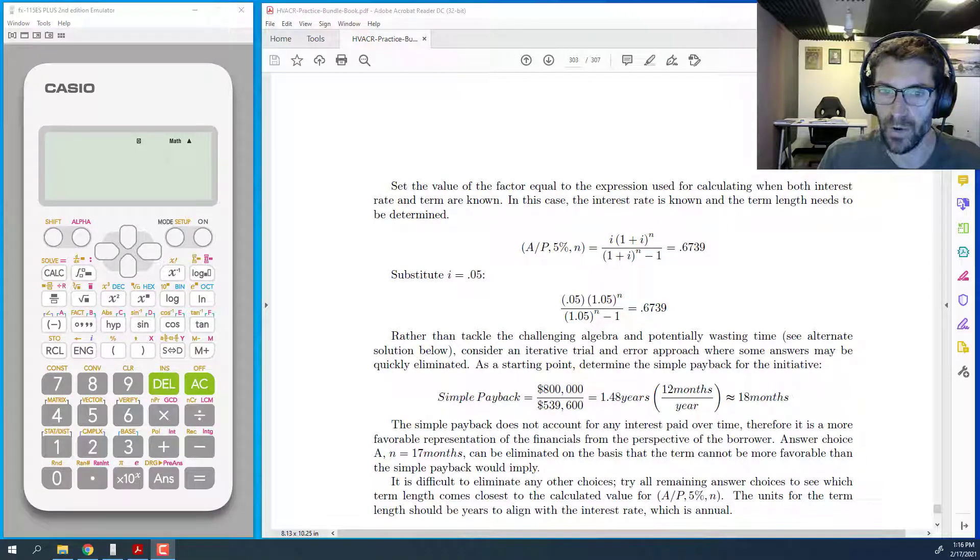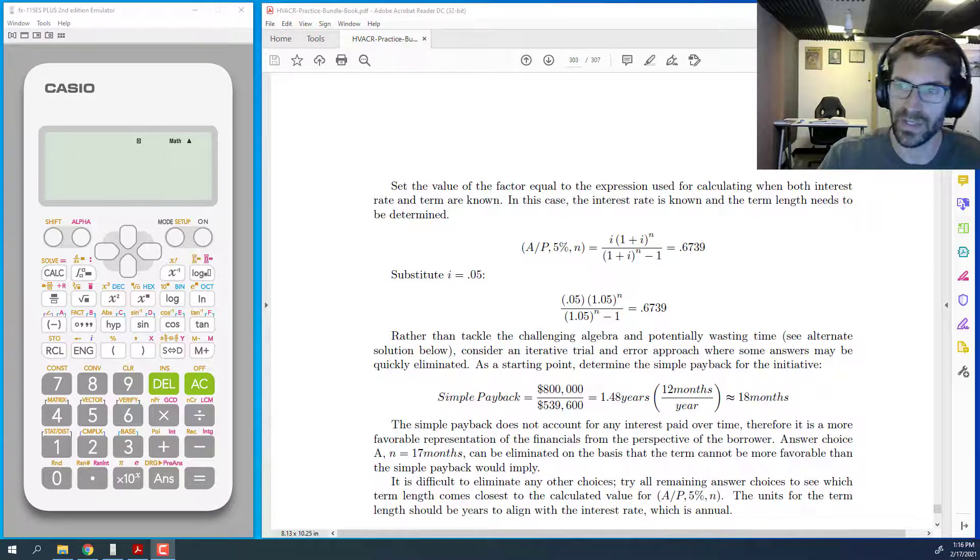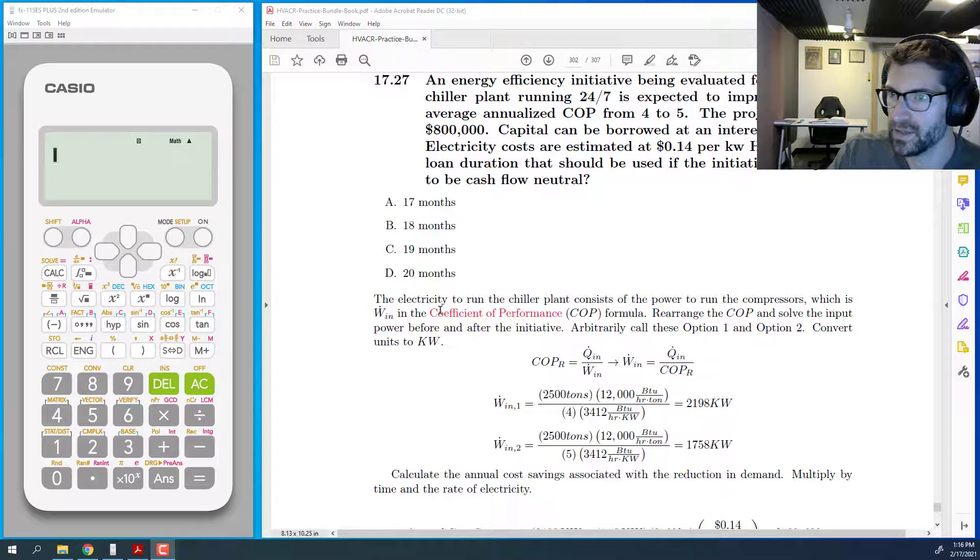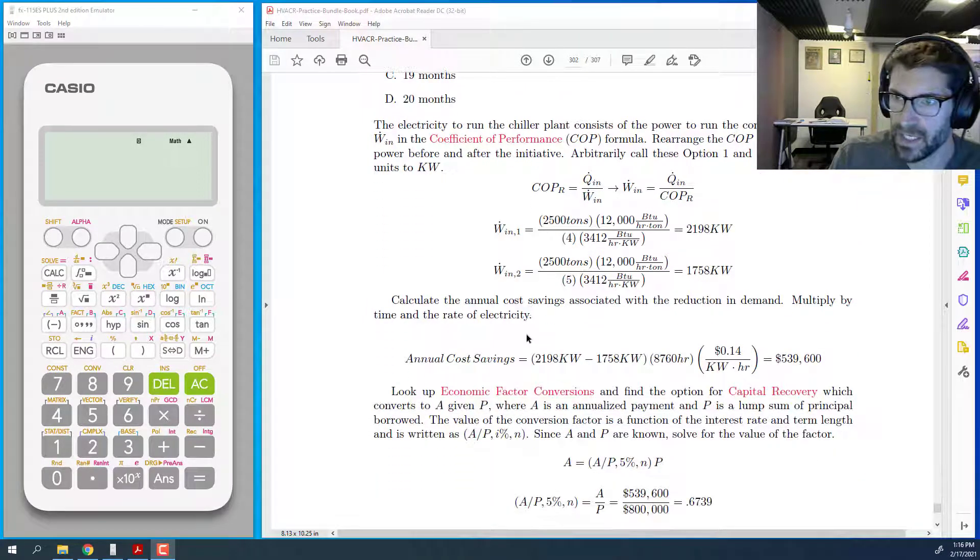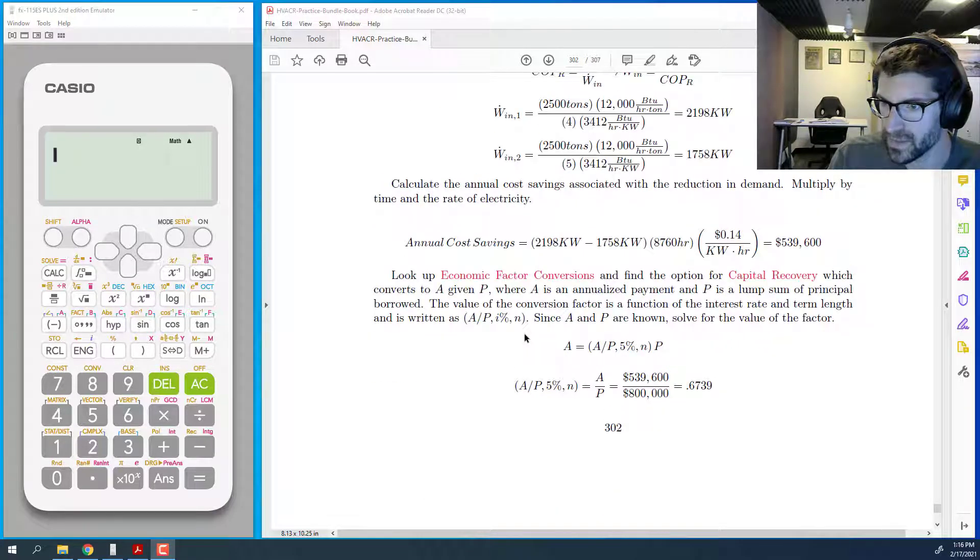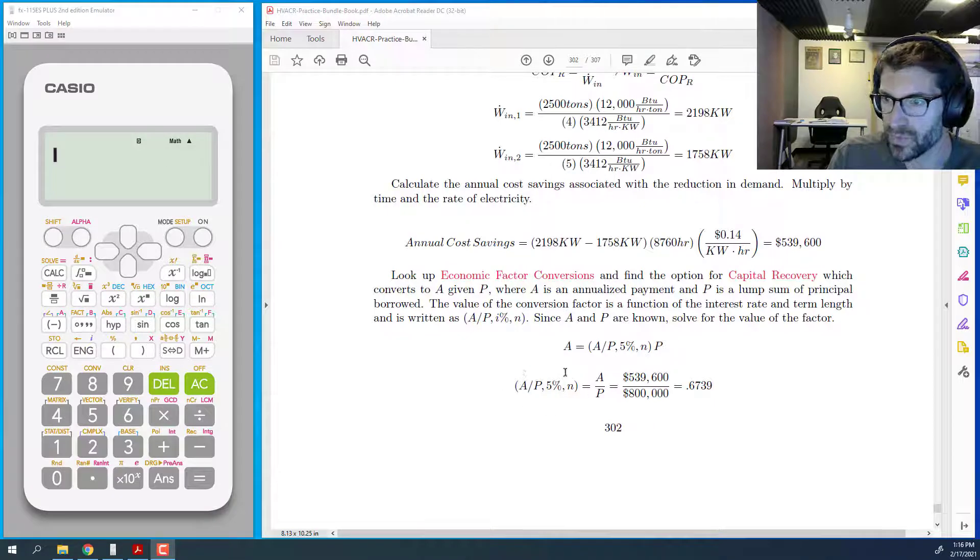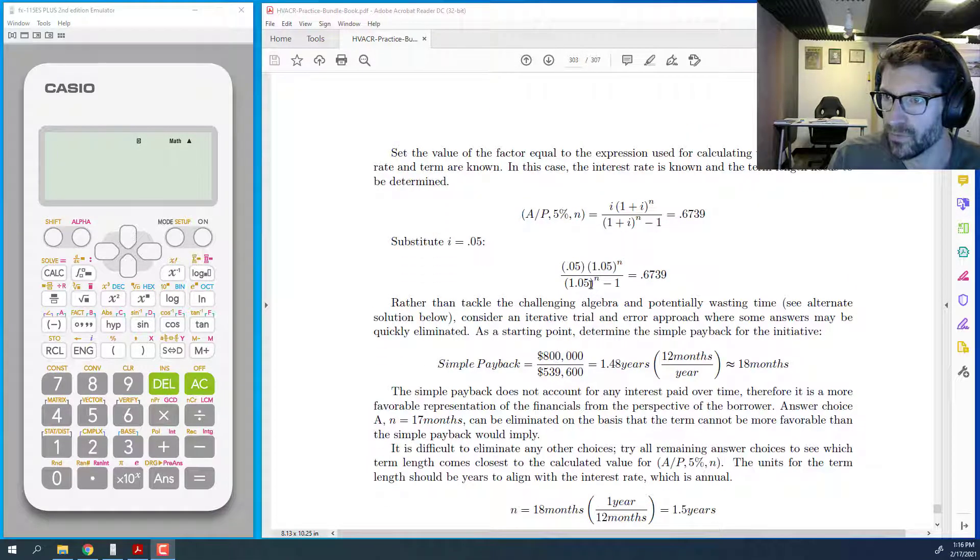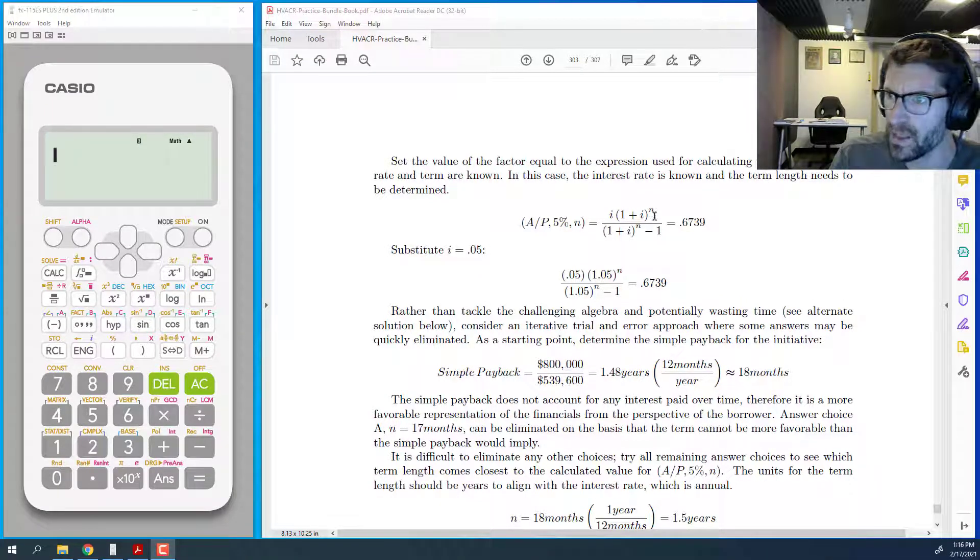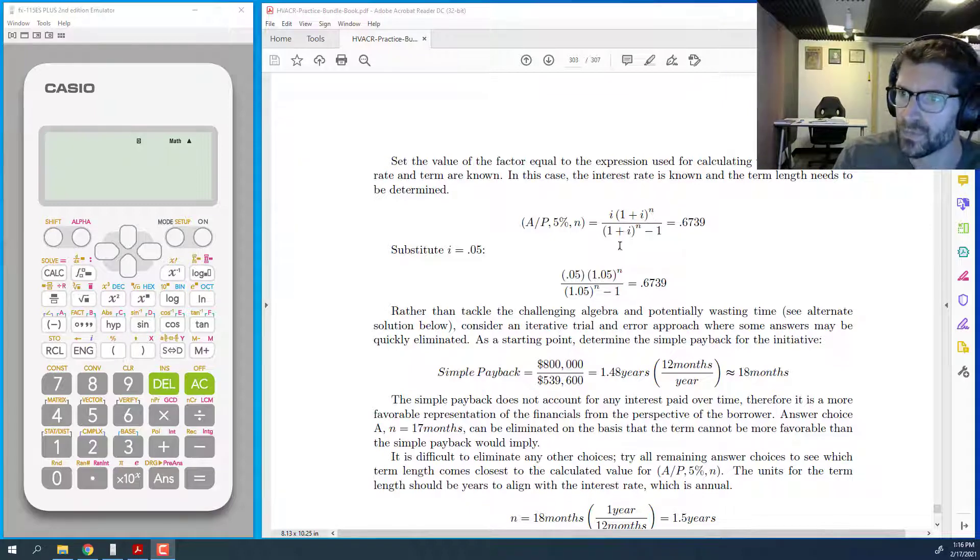But today's question is about finding an iterative solution. So in this example, this particular problem is about finding the loan duration for an initiative. And I'm not going to get into the engineering of this problem. I want to jump down after we've done some of the analysis. We have to use one of the cash flow factors. And what we're ultimately looking for is the value of the variable n. So the challenge of this problem, once you get to that point, is really just dealing with the algebra.